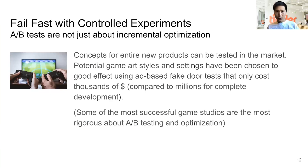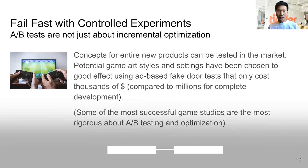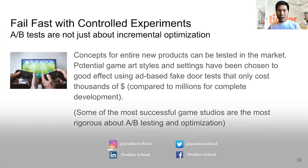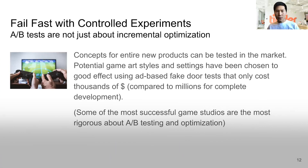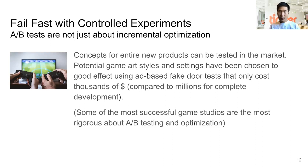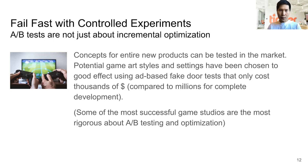Failing fast can be done with controlled experiments — A/B tests are not just about incremental optimization. Concepts for entire new products can be tested in the market. Potential game art styles and settings have been chosen using what's called a fake door test in ads that only cost thousands of dollars, compared to millions for complete game development. Some of the most successful game studios are the most rigorous about A/B testing and optimization.